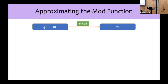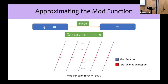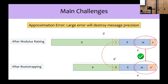In this work, we focus on approximating the mod function by some polynomial, because that is what CKKS can compute homomorphically. Our first observation is that we can assume m is significantly smaller than q, so we only care about approximating the mod function in these red approximation regions — we can simply begin bootstrapping when there are still a few excess ciphertext modulus bits at the top. The most obvious challenge is that the polynomial must be a good approximation; if it's not, the error of approximation will be large and most of the precision bits of the message will be destroyed.